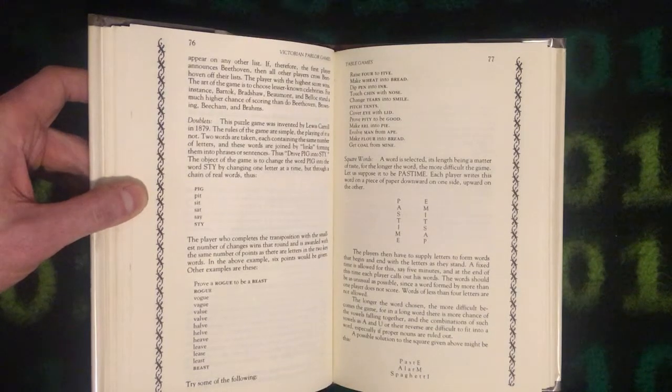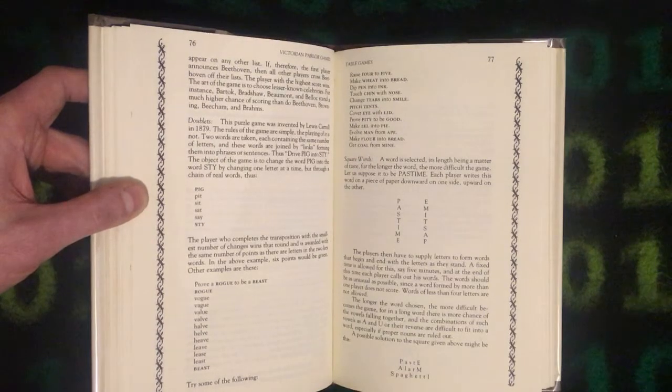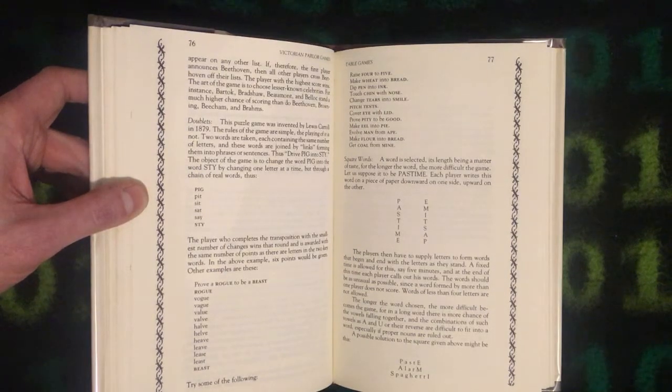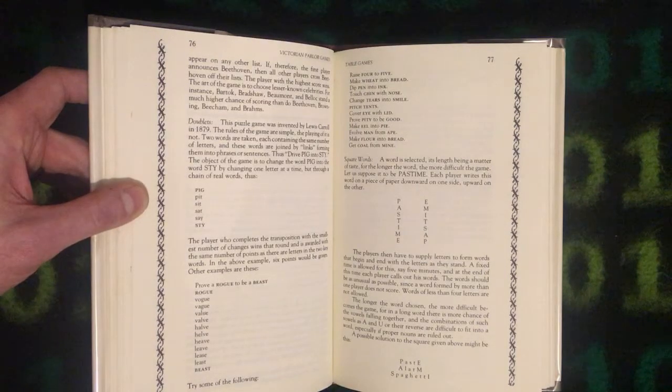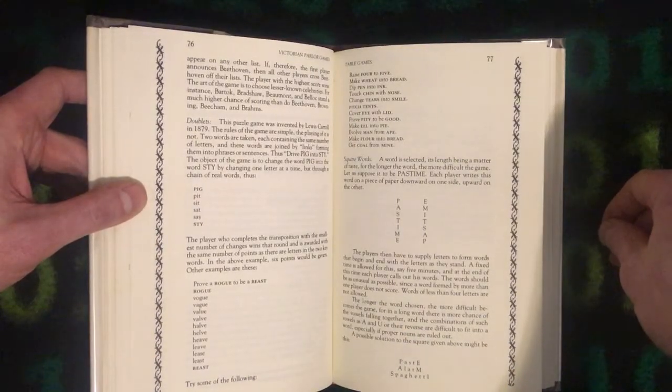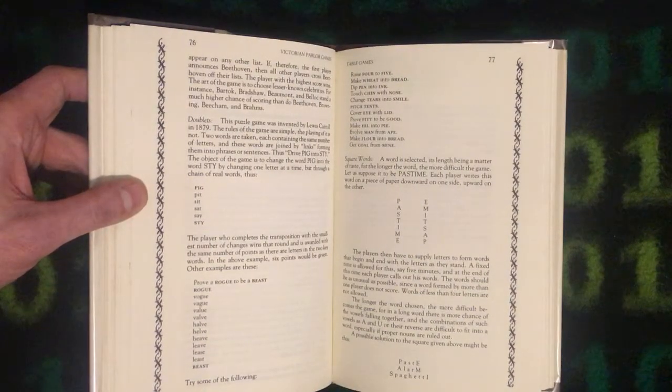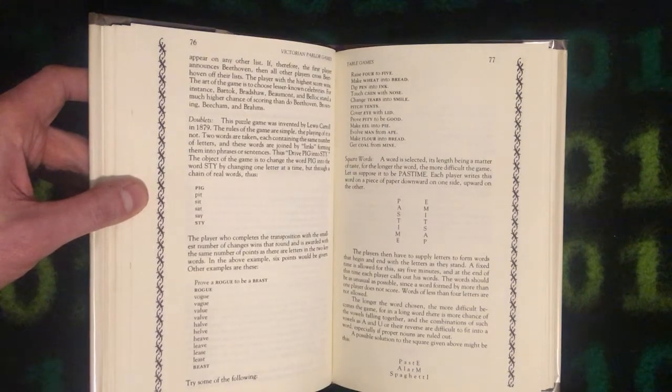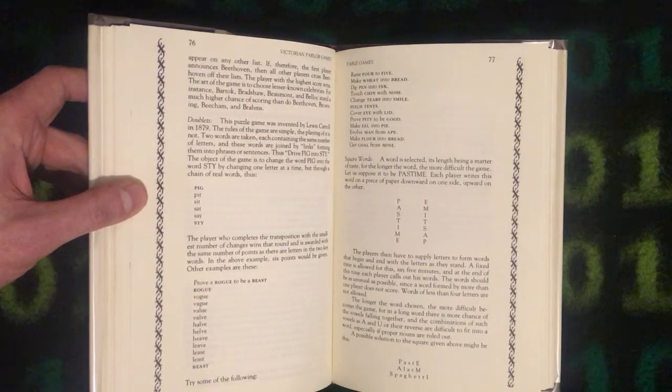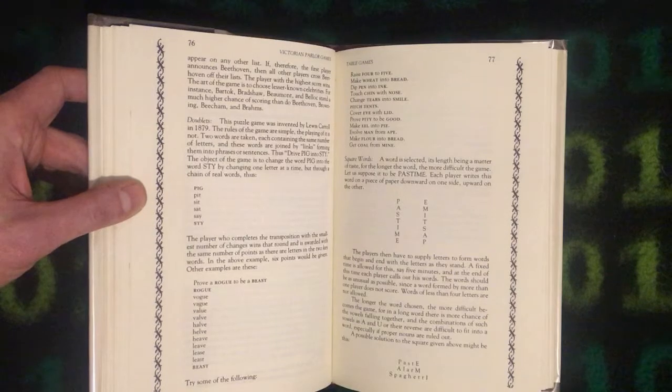Square words. A word is selected, its length being a matter of taste, for the longer the word, the more difficult the game. Let us suppose it to be pastime. Each player writes this word on a piece of paper downward on one side, upward on the other. The players then have to supply letters to form words that begin and end with the letters as they stand. A fixed time is allowed for this, say five minutes, and at the end of this time each player calls out his words. The words should be as unusual as possible since a word formed by more than one player does not score. Words of less than four letters are not allowed. The longer the word chosen, the more difficult becomes the game.